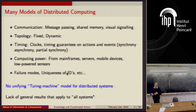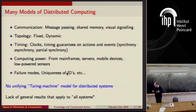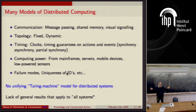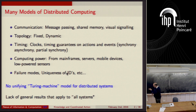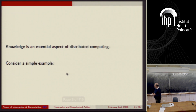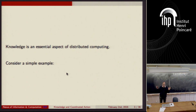Partly because of the huge variety, we have no single Turing machine abstraction, and practically no general results for all distributed systems. I'm going to talk today about an approach that generates, that allows for some of these. The basic point I'm going to get across is that a notion of knowledge is really an essential aspect of distributed computing.